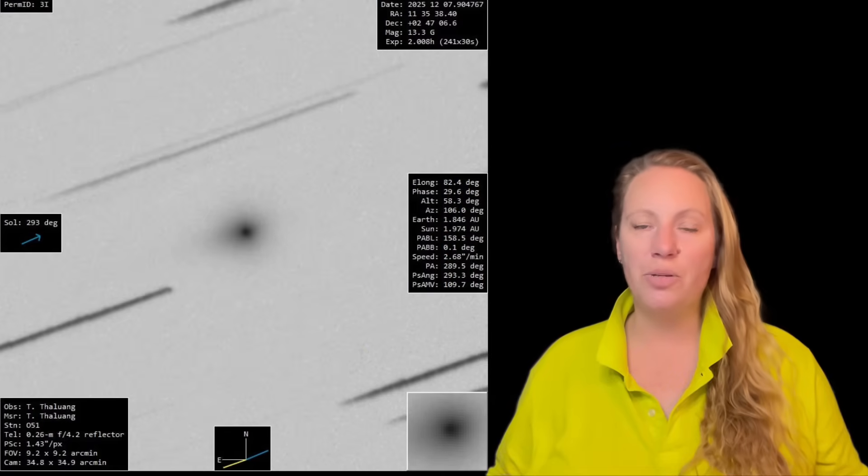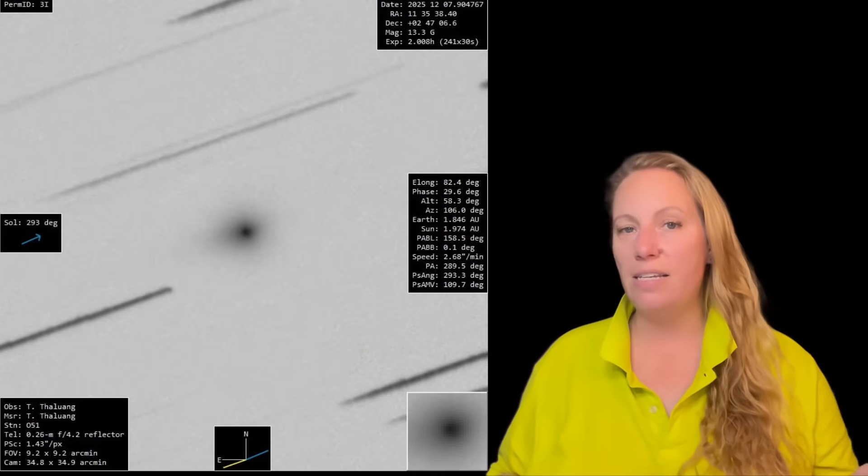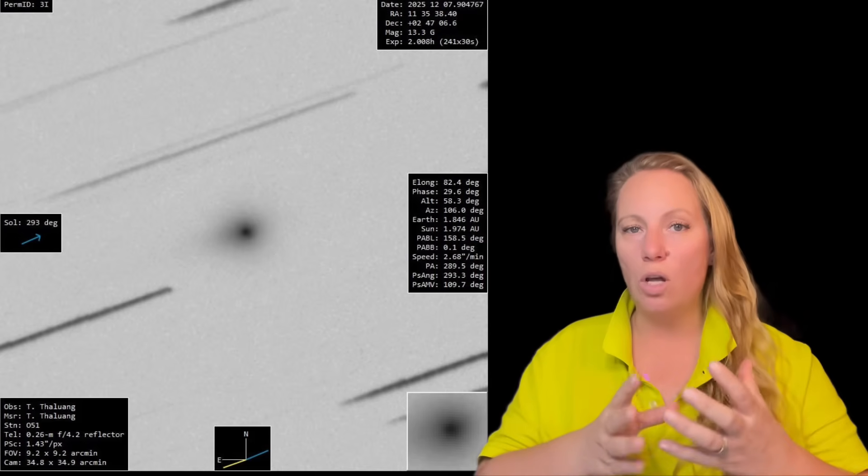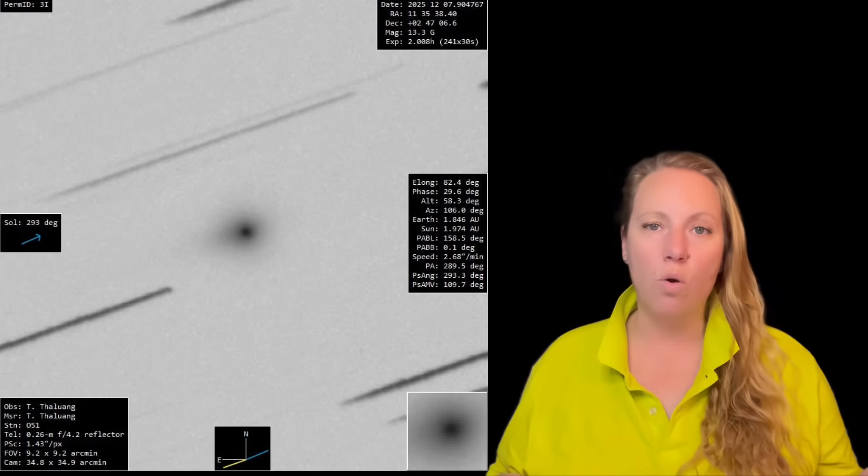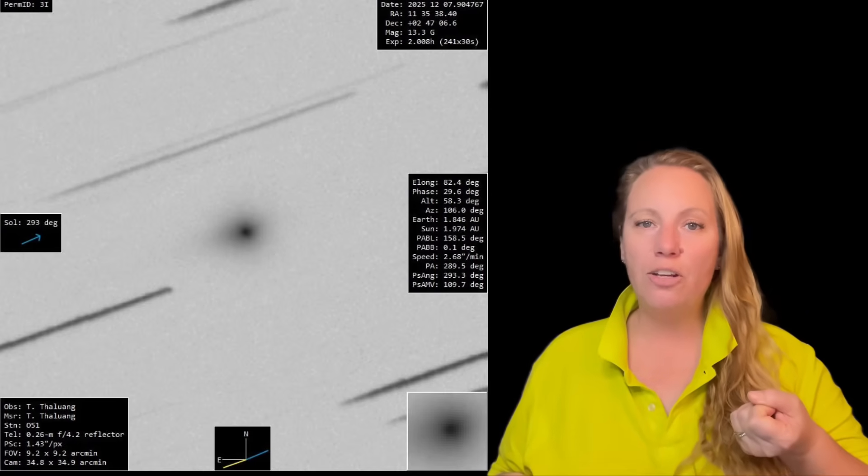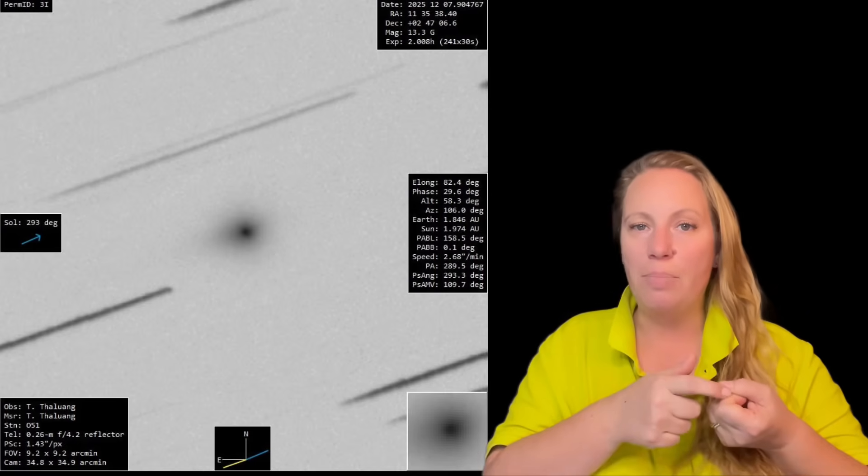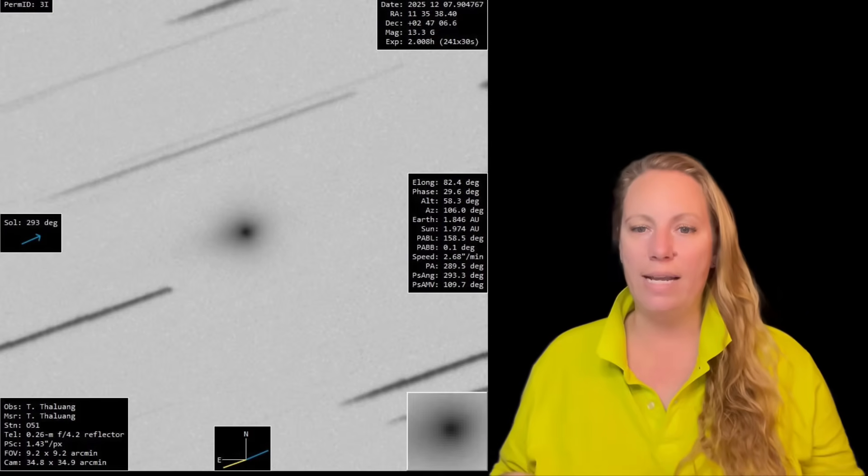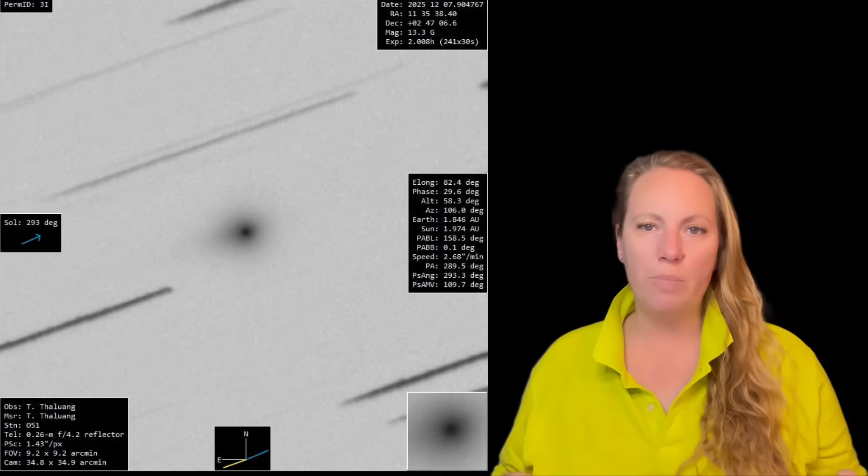Many scientists say it's just a normal comet, basically a dirty snowball made of ice and dust. Nothing more to see here. But when comets get close to the sun, the heat makes ice turn into gas - we call that sublimation. It releases gas and dust into a fuzzy cloud around the solid core of the comet, and we call that the coma.